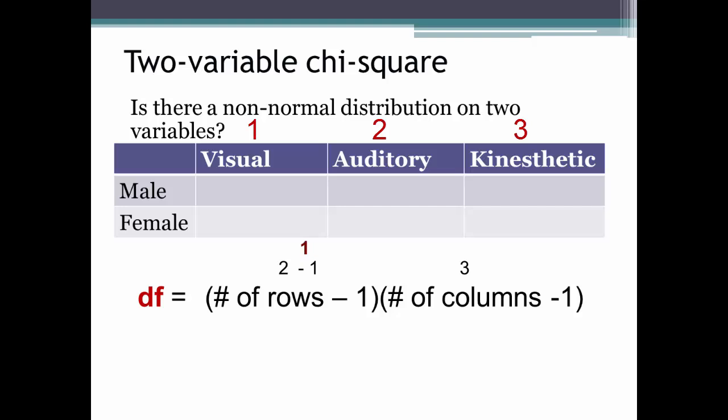And we subtract 1, ending up with 2. Then we multiply these two numbers together, 2 times 1 equals 2, or 2 degrees of freedom.